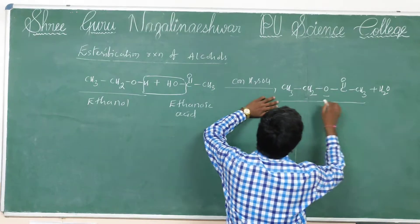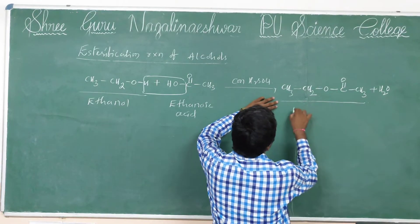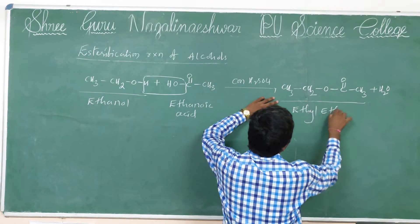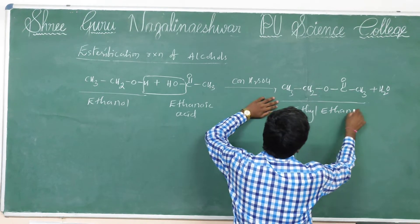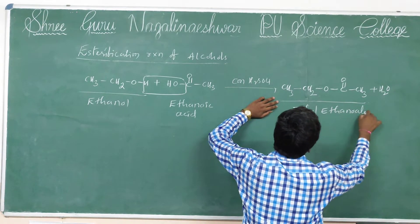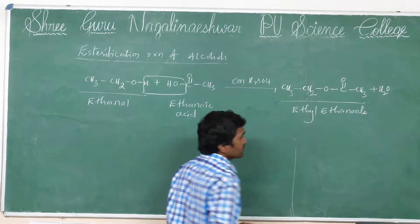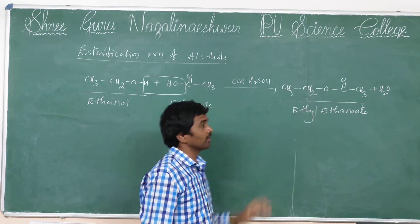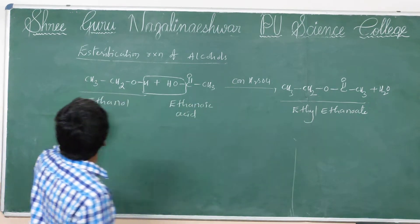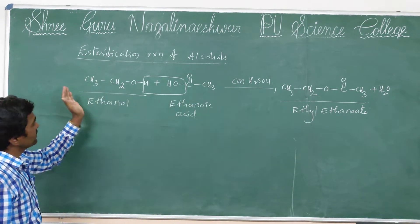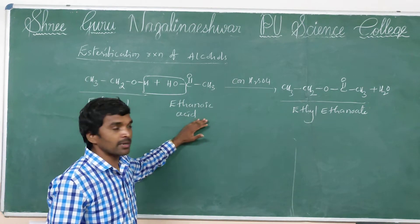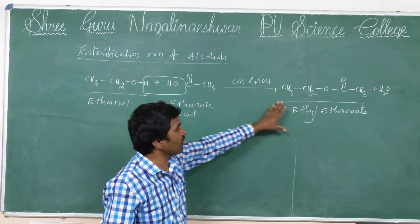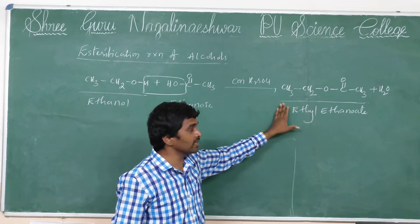So here, ethyl ethanoate — what is the product? Ethyl ethanoate will be formed. So this is the ester. The reaction between alcohol and carboxylic acid produces water, and then formation of ester.